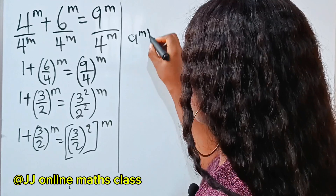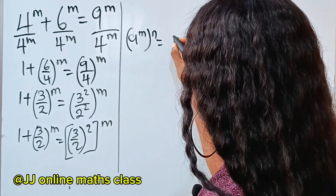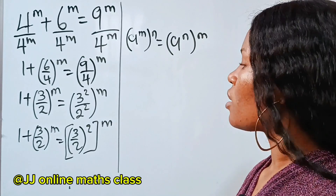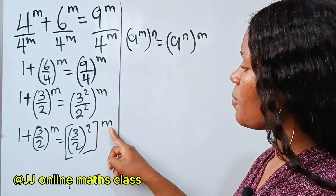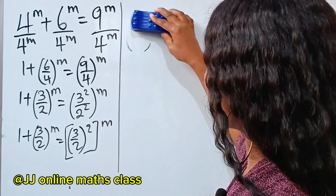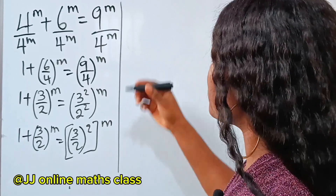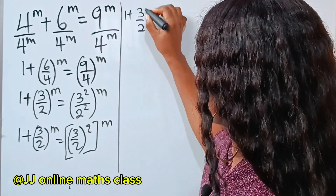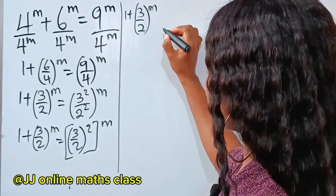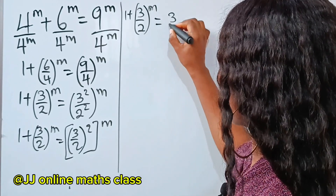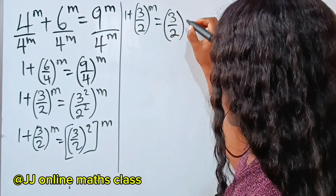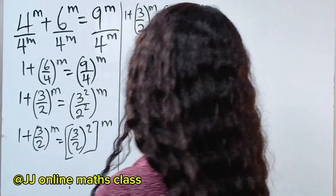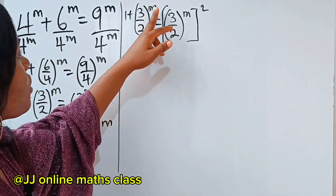Recall that a to the power of m raised to the power of n is the same as a to the power of n raised to the power of m. So we can interchange these positions. If we do that, we have 1 plus 3 over 2 to the power of m is equal to 3 over 2 to the power of m, squared.